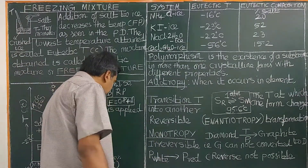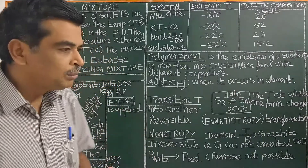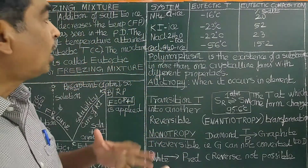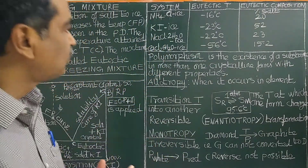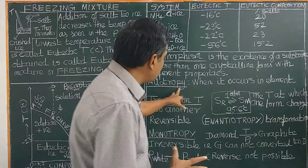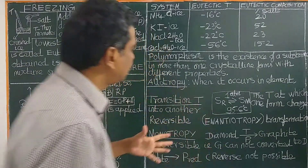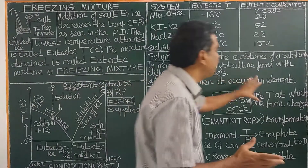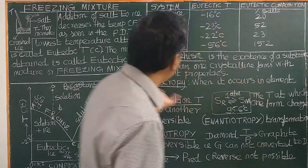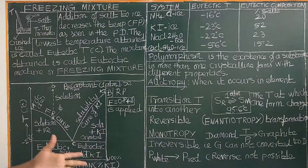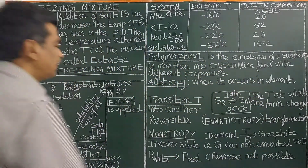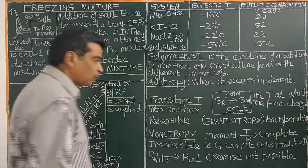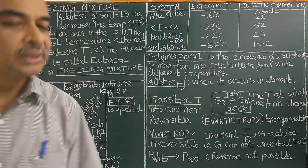So today we have seen what is a freezing mixture and its uses, what is polymorphism, what is allotropy (polymorphism occurring in elements), transition temperature, and the differences between enantiotropy and monotropy. Thank you for watching.